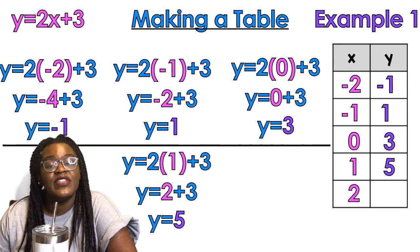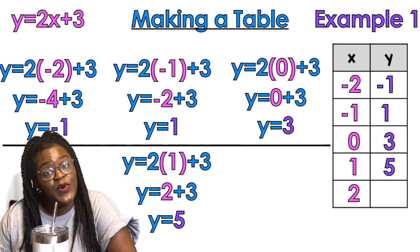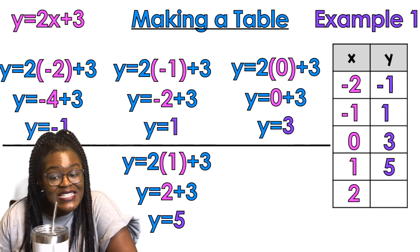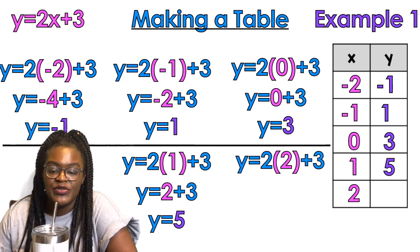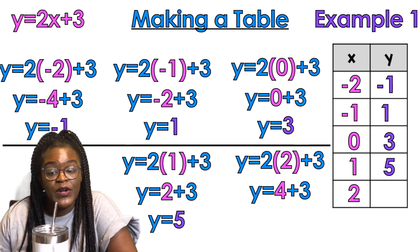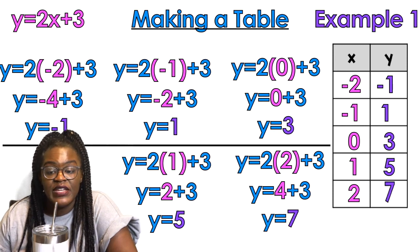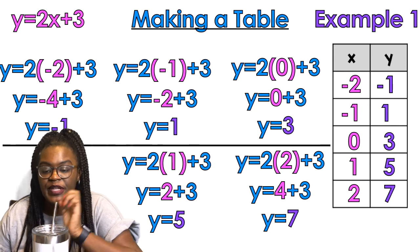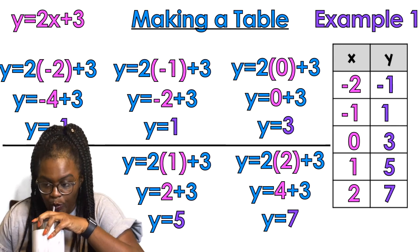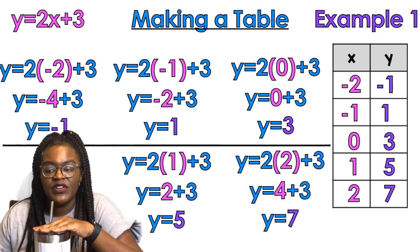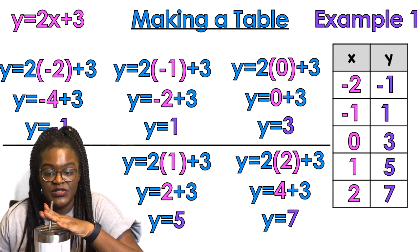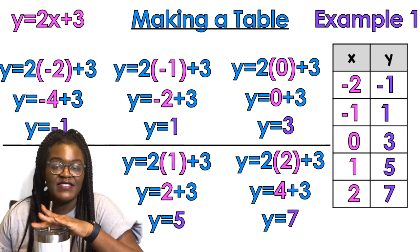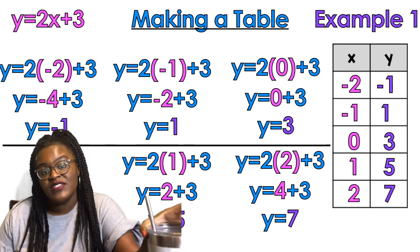The last x value to plug in is two: y equals two times two plus three. Two times two is positive four, positive four plus three is seven. An easy way to check if you're right is to see if the y values are evenly spaced — negative one to one is two spaces, one to three is two spaces, three to five is two spaces, five to seven is two spaces. If they're all the same, you know you did it right.